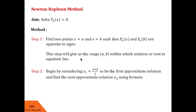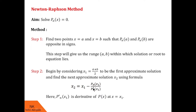In step 2, we begin by considering the first better approximate solution x1 as the midpoint of a and b, given by (a + b) / 2. Then using x1, we find the next better approximate solution x2 using the Newton-Raphson formula: x2 = x1 − Pn(x1) / Pn'(x1), where Pn' refers to the derivative of Pn.